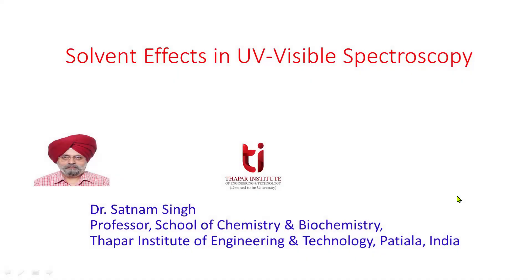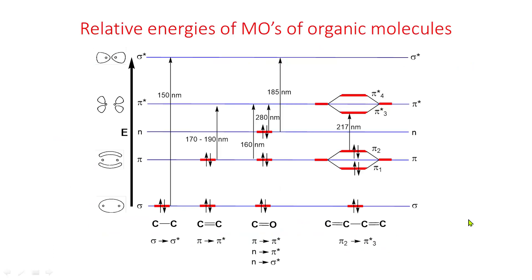In this session, we will discuss Solvent Effects in UV-Visible Spectroscopy. This diagram shows relative energies of molecular orbitals of organic molecules: alkanes, alkenes, carbonyl compounds, and conjugated double bonds.